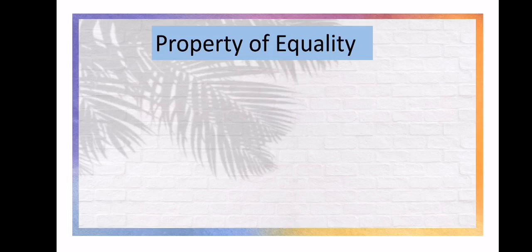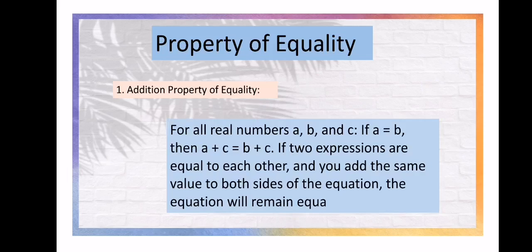In solving equations, we use the property of equality. First, the Addition Property of Equality: for all real numbers A, B, and C, if A equals B, then A plus C equals B plus C. If two expressions are equal to each other and you add the same value to both sides of the equation, the equation will remain equal.